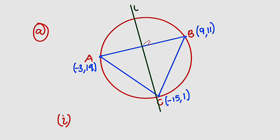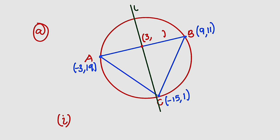Let's find the coordinates of that midpoint. For x, we take -3 and add it to 9 and divide by 2: -3 + 9 = 6, and 6 divided by 2 is 3. For y, 19 + 11 = 30, and 30 divided by 2 is 15. So the midpoint is (3, 15).